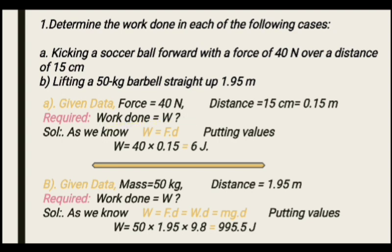Solution: by definition, W equals F dot d. Put in the values — force is 40 Newton and distance is 0.15 meter. Multiplying these two together gives 6 joules. So when the soccer ball is kicked with 40 Newton over 15 cm, the work done is 6 joules, meaning 6 joules of energy is transferred.